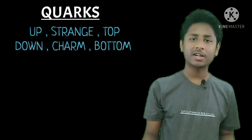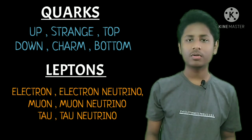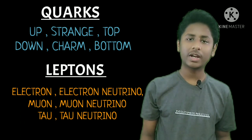bottom and top, and six kinds of leptons: electron, muon, tau, electron neutrino, muon neutrino, and tau neutrino.